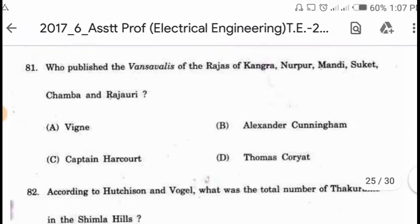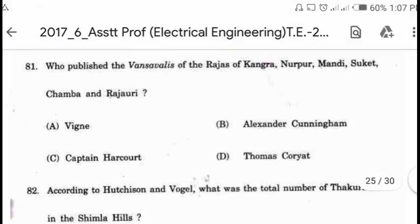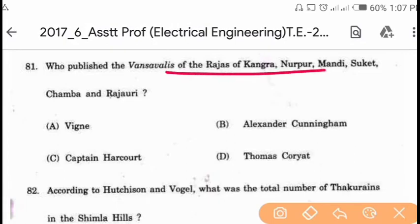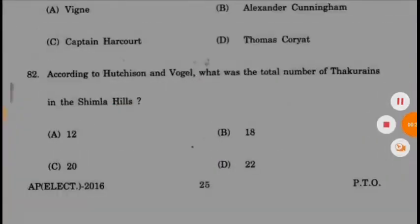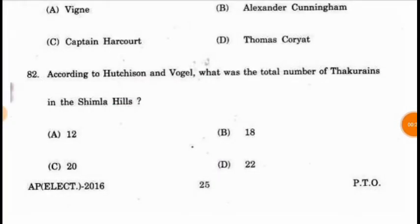This was published by Alexander Cunningham. Option B is correct. Question 82: According to Hutchinson and Vogel, what is the total number of Thakurais in Shimla Hills?